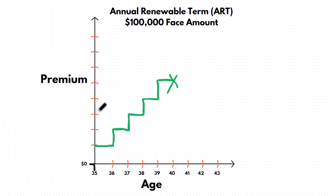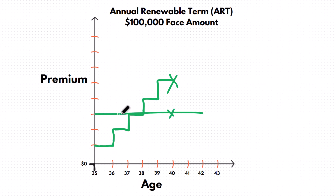If he got this plan as a level term, then the premium would be somewhere in the middle — probably right here. The premium would be this same amount the entire time of the policy. It would end right at age 40, but the premium would be the same from 35 to 40. He'd pay a little higher in the beginning and a little lower later because the premiums are averaged out over time.